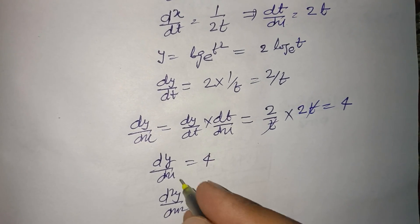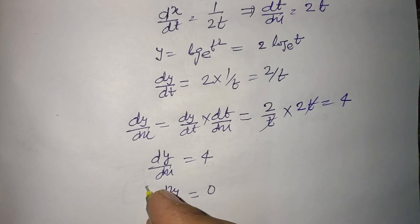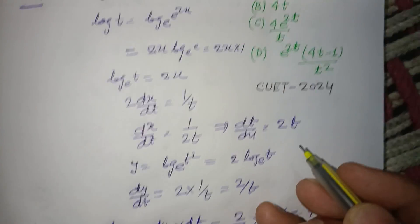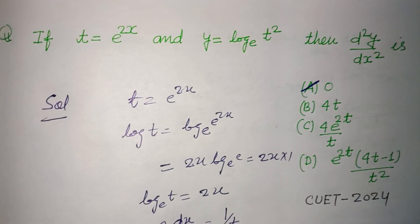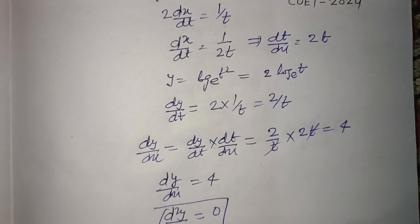this will be 0. So 0 is the correct answer of this question, which is found in option A. Option A is correct. I hope you got it. Please like the video, subscribe the channel. Thanks for watching.